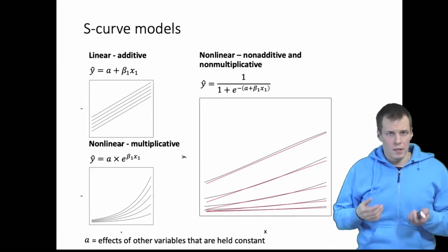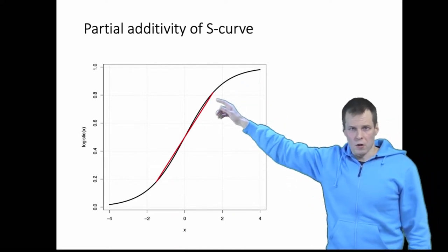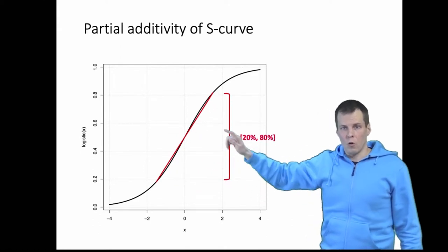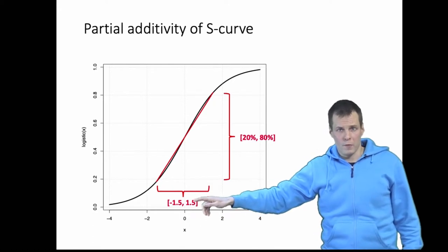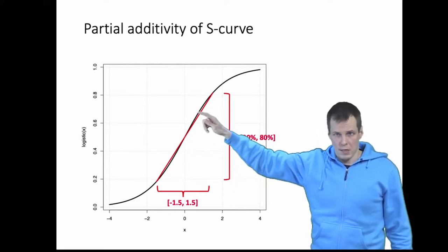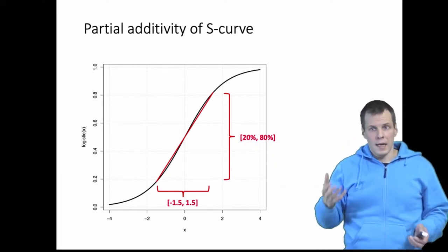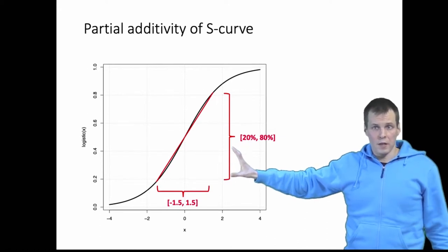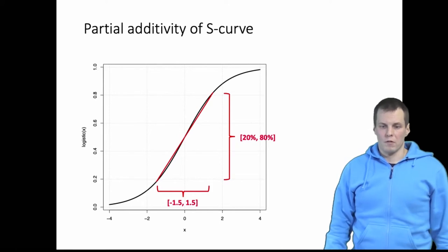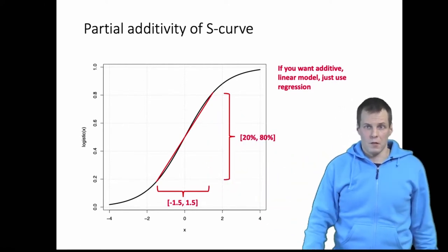There is another important feature of the S-curve: it is partially additive. The logistic curve — and the probability curve looks the same — is approximately linear between about 20% and 80%, or roughly between minus 1.5 and 1.5. So a linear regression analysis gives you almost the same predictions as S-curve models do for this 20-to-80 percent probability range. If your predictions are in this range, you can interpret regression results as if they were normal regression results — or even better, just use normal regression analysis directly.